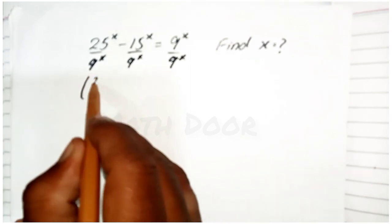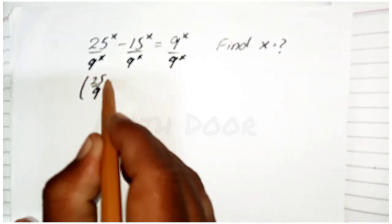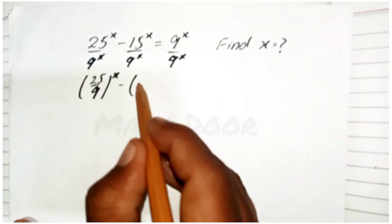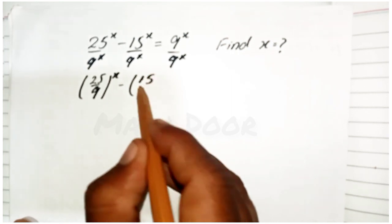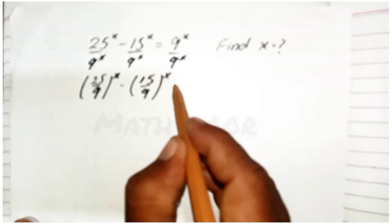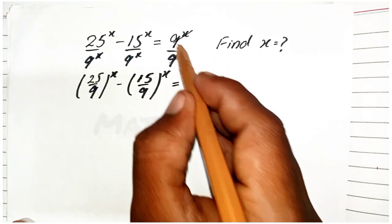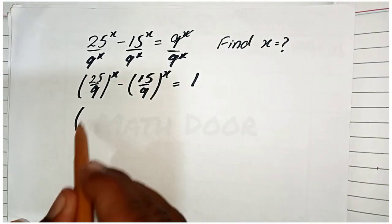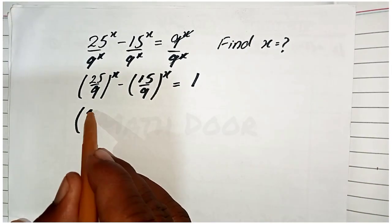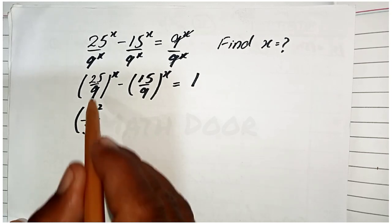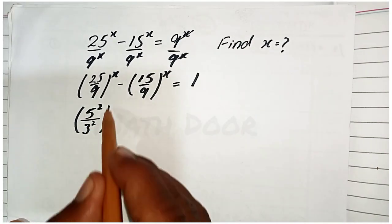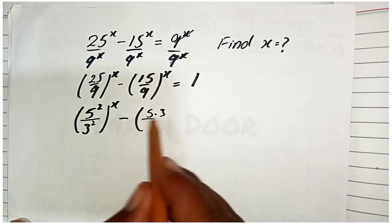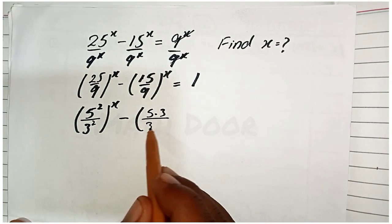Dividing both sides by 9^x, we get (25/9)^x, since they have the same power. We can also write (15/9)^x is equal to 1, since the 9^x cancels. We can write 25 as 5² over 3², and 15 as 5·3 over 3·3.